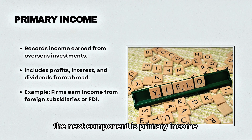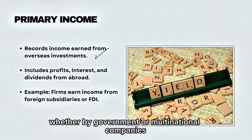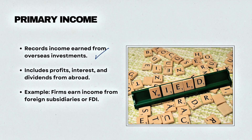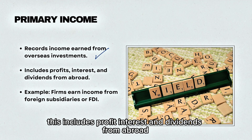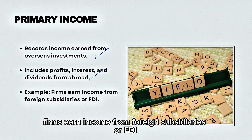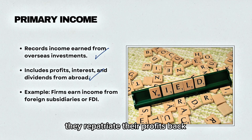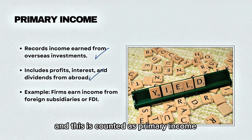The next component is primary income. This records income earned from overseas investments, whether by government or multinational companies. This includes profit, interest, and dividends from abroad. For example, firms earn income from foreign subsidiaries or FDI, and then they repatriate their profits back — this is counted as primary income.